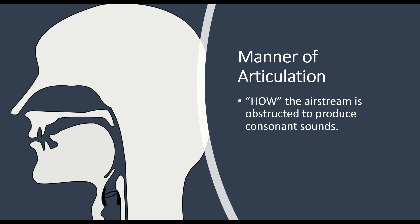Basically, manner of articulation is how the airstream is obstructed to produce sounds. If we talk about place of articulation, it's where the sounds are produced, and the manner of articulation is how they're produced. There are six basic manners of articulation that we will look at.